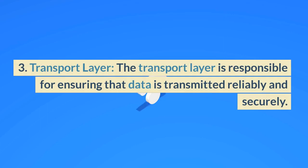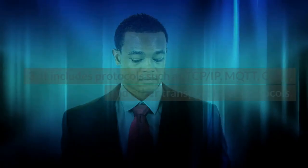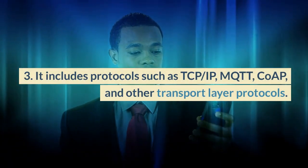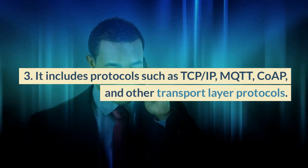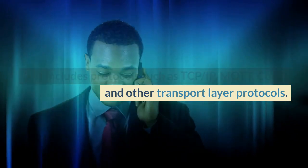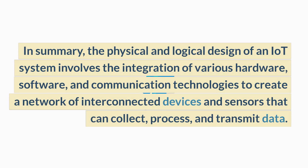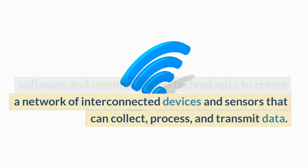Third, the transport layer. The transport layer is responsible for ensuring that data is transmitted reliably and securely. It includes protocols such as TCP, IP, MQTT, CoAP, and other transport layer protocols. In summary, the physical and logical design of an IoT system involves the integration of various hardware, software, and communication technologies to create a network of interconnected devices and sensors that can collect, process, and transmit data.